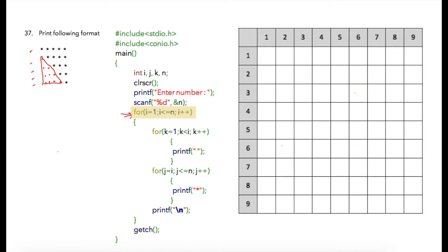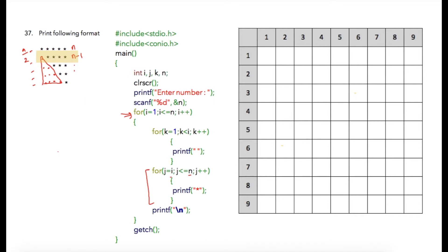It is obvious that for printing these n rows we need our first for loop starting from 1 to n. On the first row we are printing n stars, then on the second row n minus 1, and so on. So our loop for printing stars can start from i till n — when i is 1 this loop will print 5 stars, and on the second line i is 2 so it will print 2 to 5, giving 4 total stars.